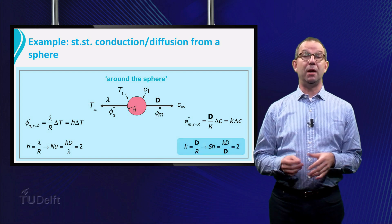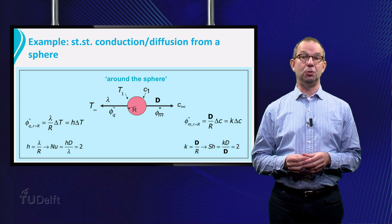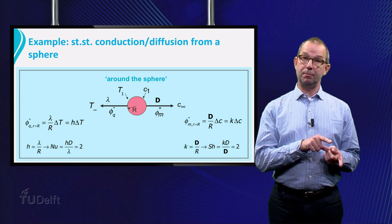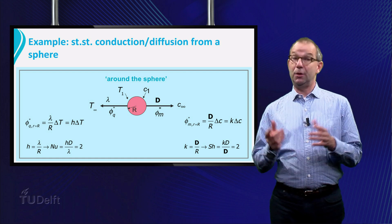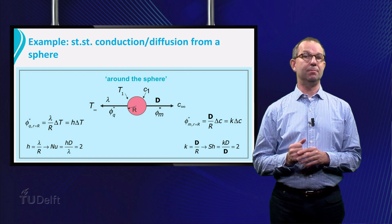This can be summarized as Sherwood is 2. If you know one, you know the other, if you understand the analogy. Pretty handy, isn't it?